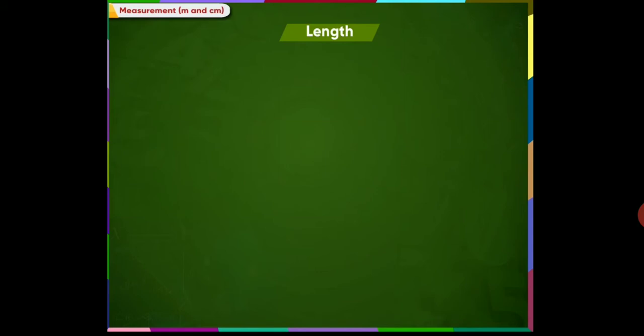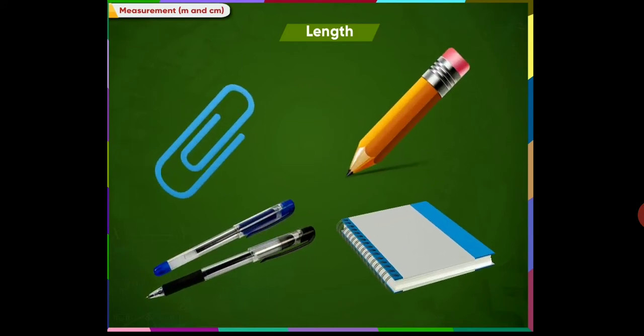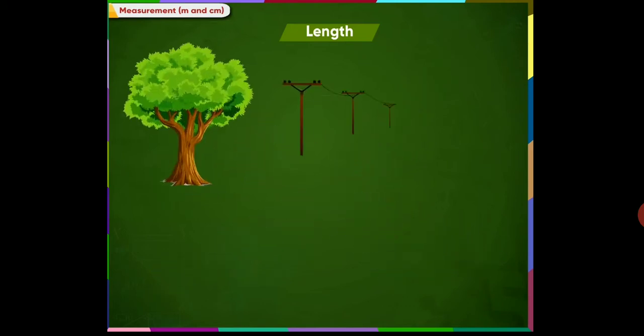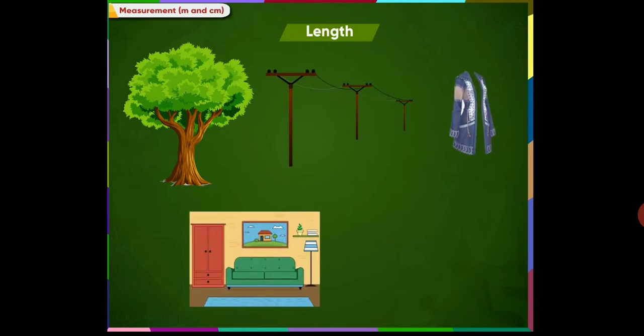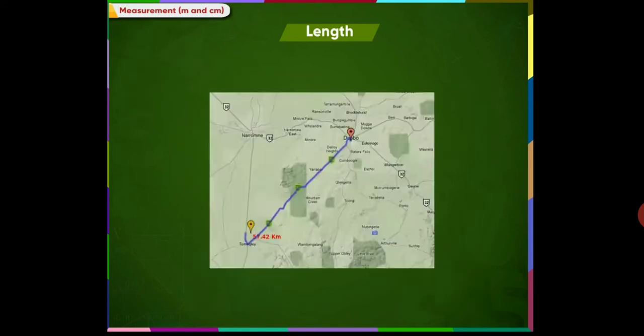We see many things around us. Some are very short in length such as paper clip, pencil, pen, notebook, etc. Some are long in length such as tree, electric pole, cloth, length of room, railway track, and some are very long such as distance between two cities.